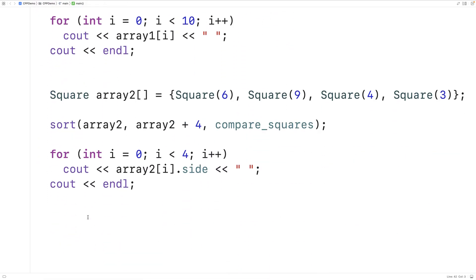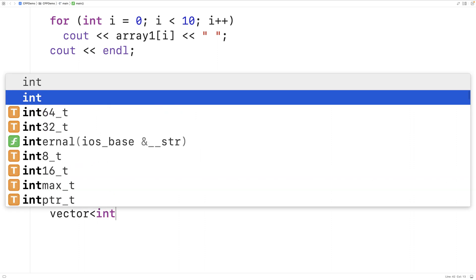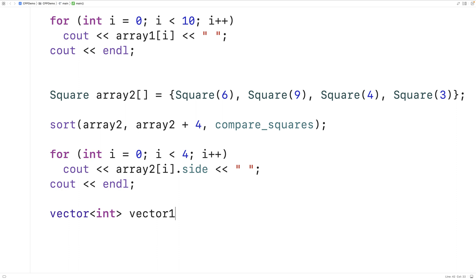We can use the sort function with vectors and any other random access containers in C++. So let's go over an example of sorting a vector. We'll say here vector int vector1. And we'll put numbers from zero to nine here again. 9, 4, 5, 8, 3, 7, 2, 6, 0, 1.